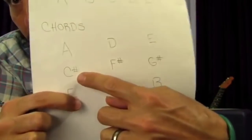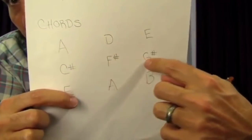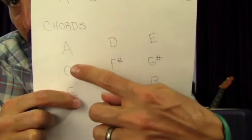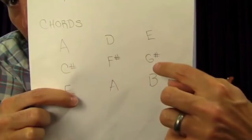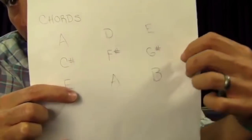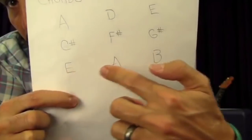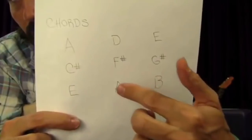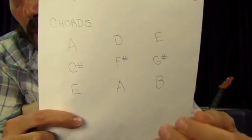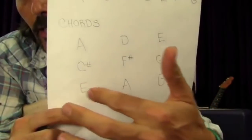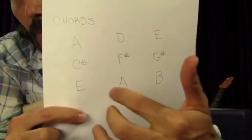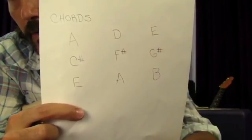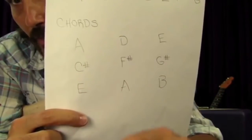On the next pass, hit the third — the note that makes the chord major or minor — as each chord goes by. Then on the next pass, hit the fifth of the chord to hear what that sounds like. Then you build your riffs as those chords are going by, learning the target notes to land on so it sounds safe.